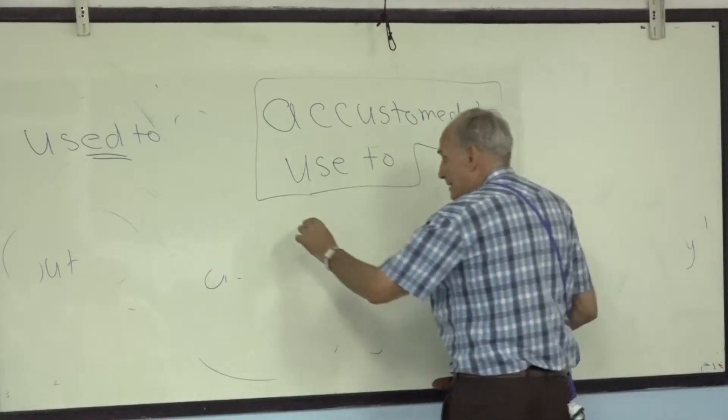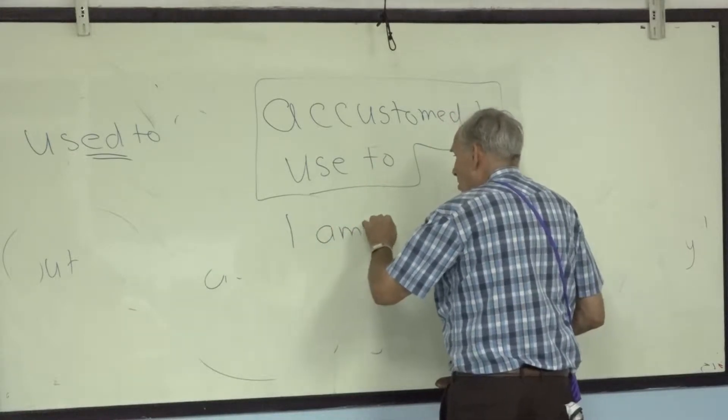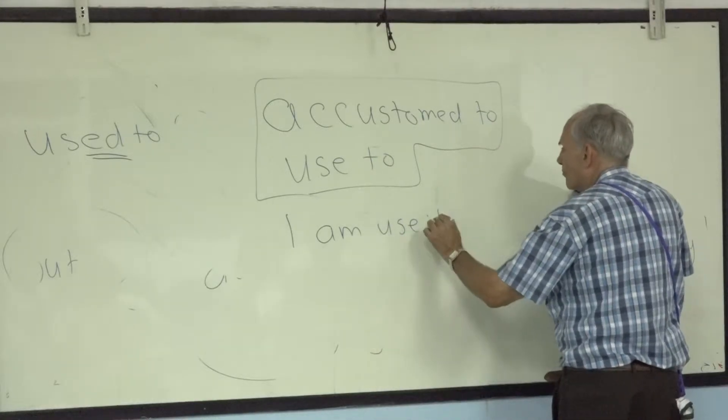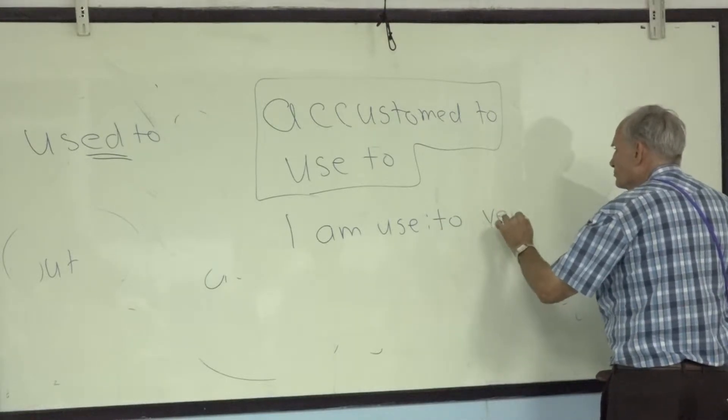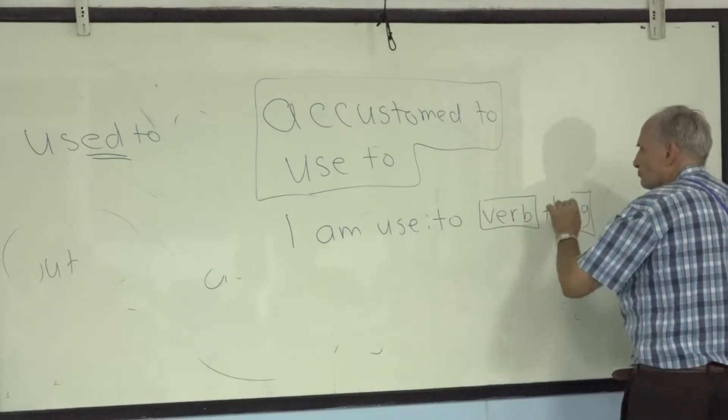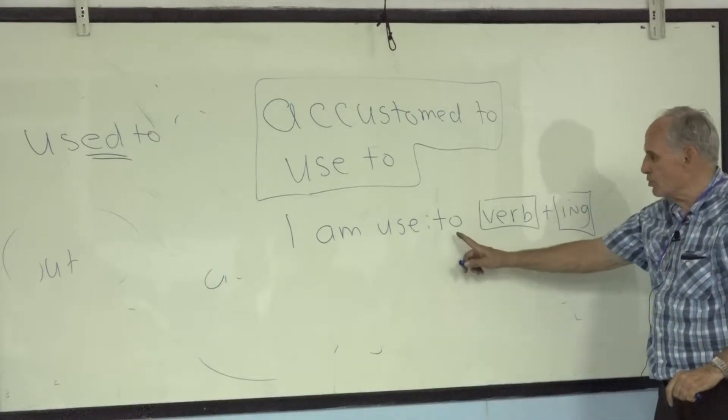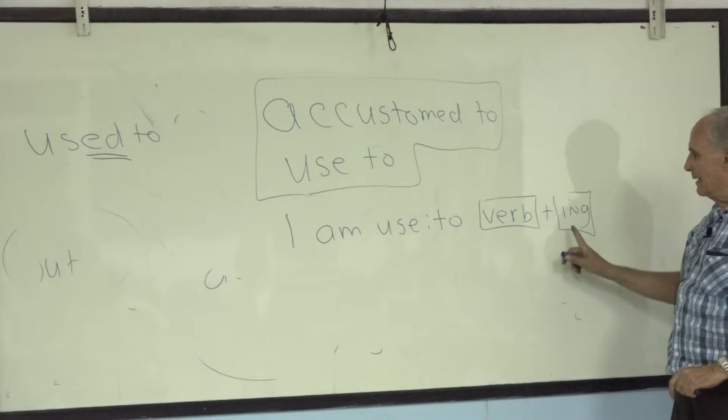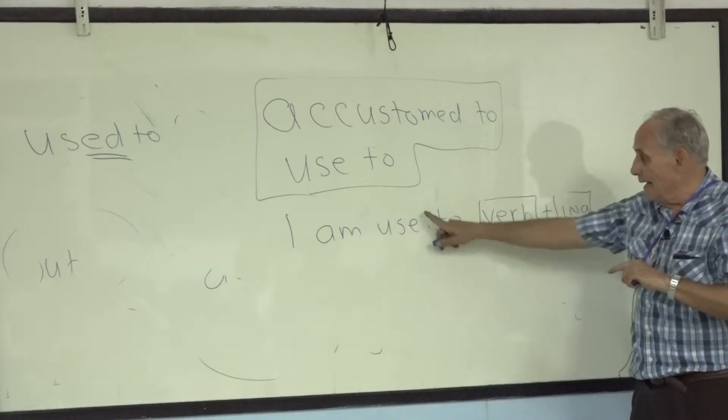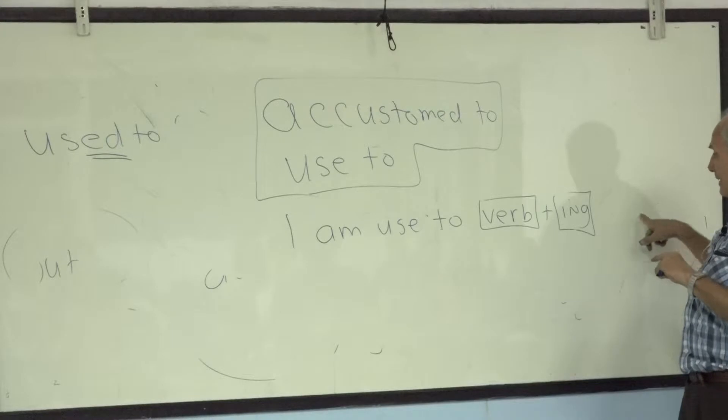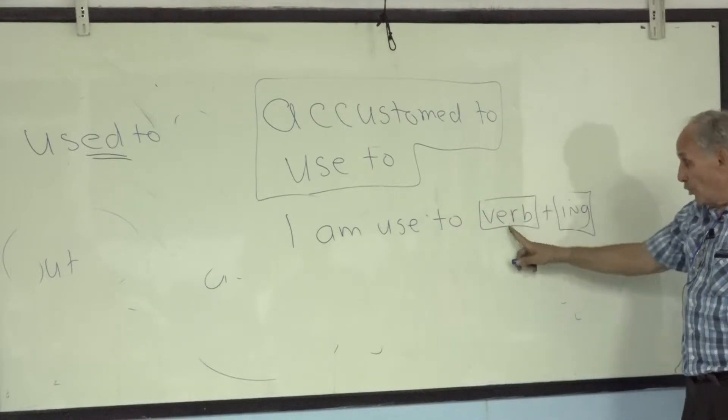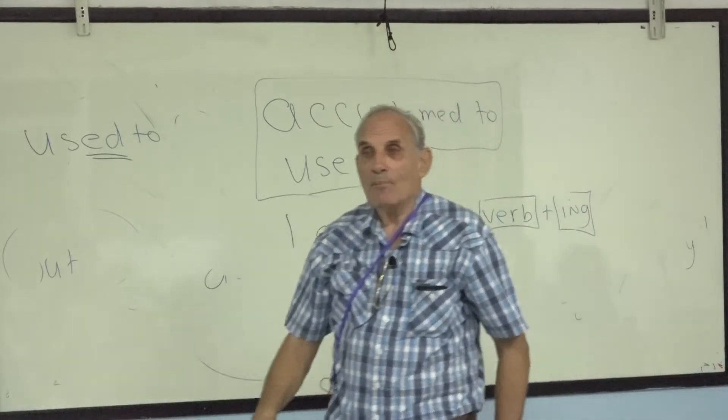This one is present. I am used to. Separate them, then do the verb and put ing. I am used to eating spicy food. So present continuous tense - the verb to be, verb in the ing.